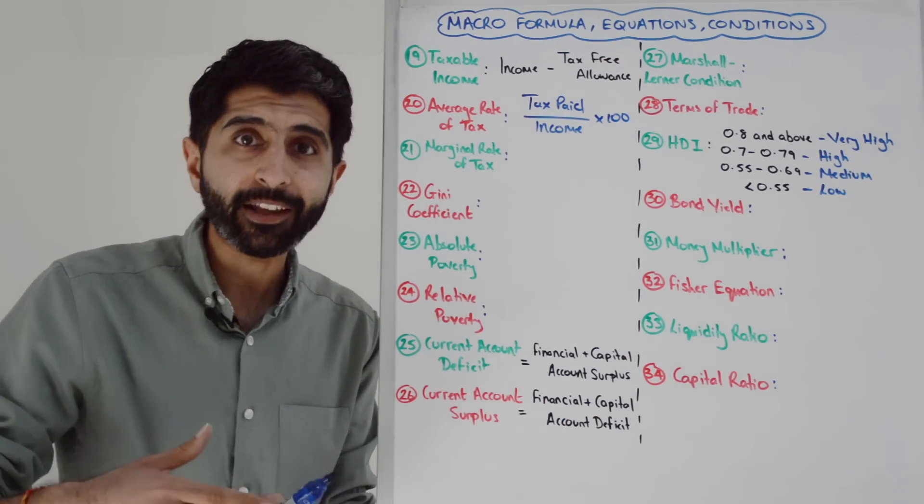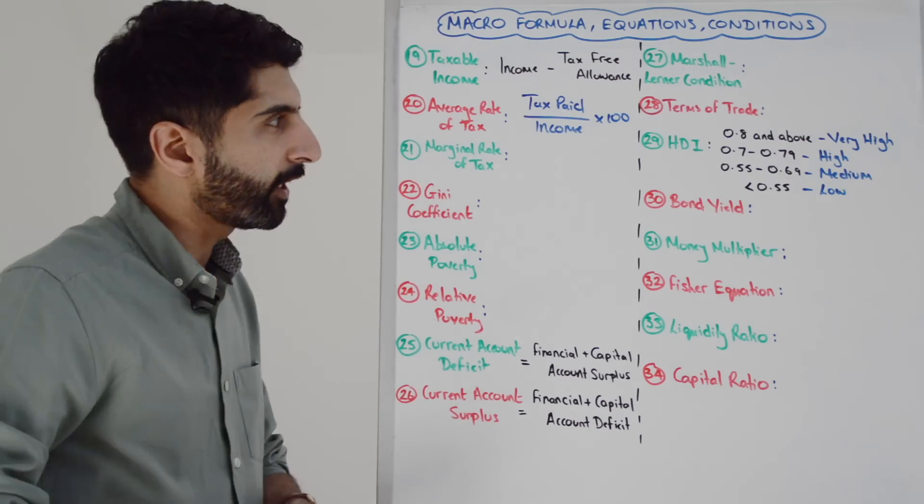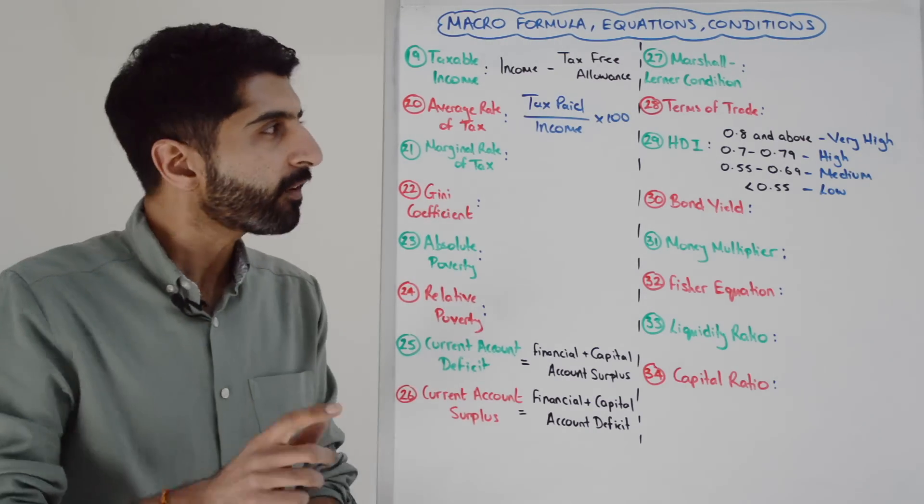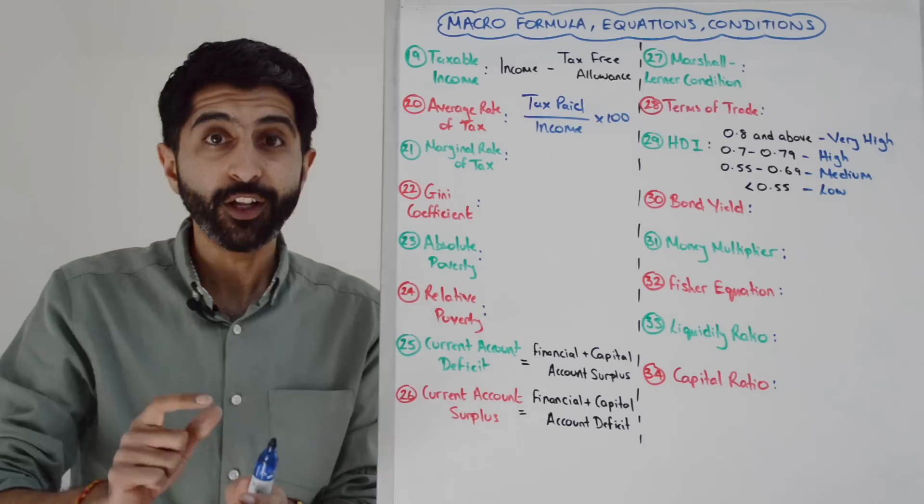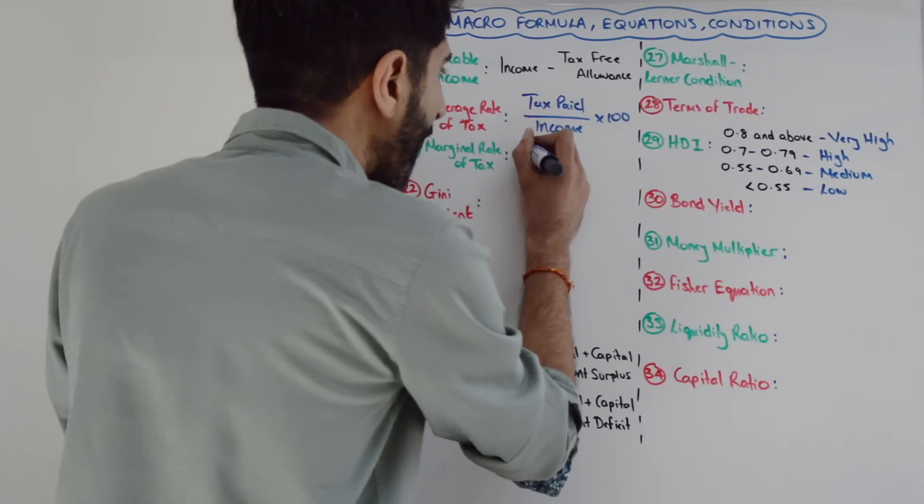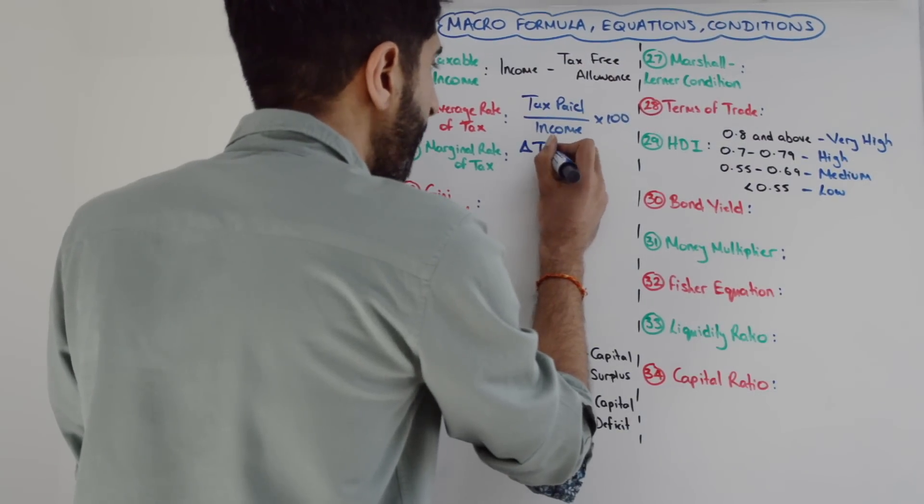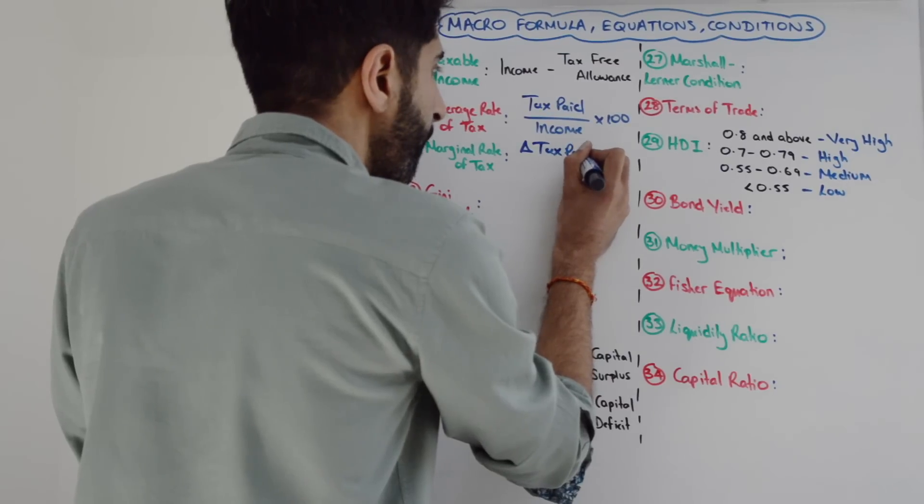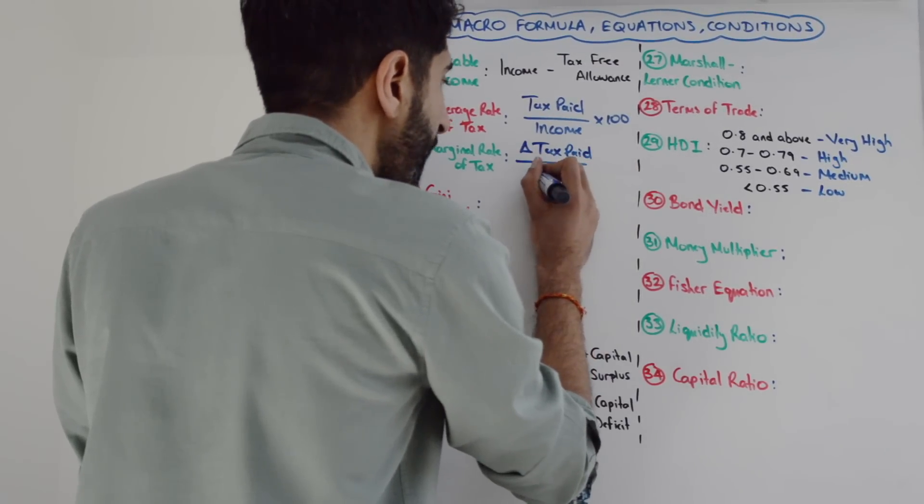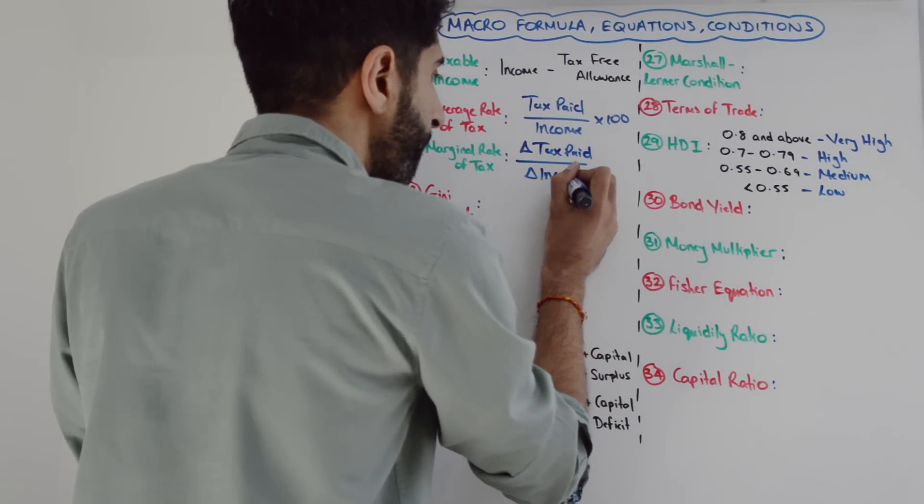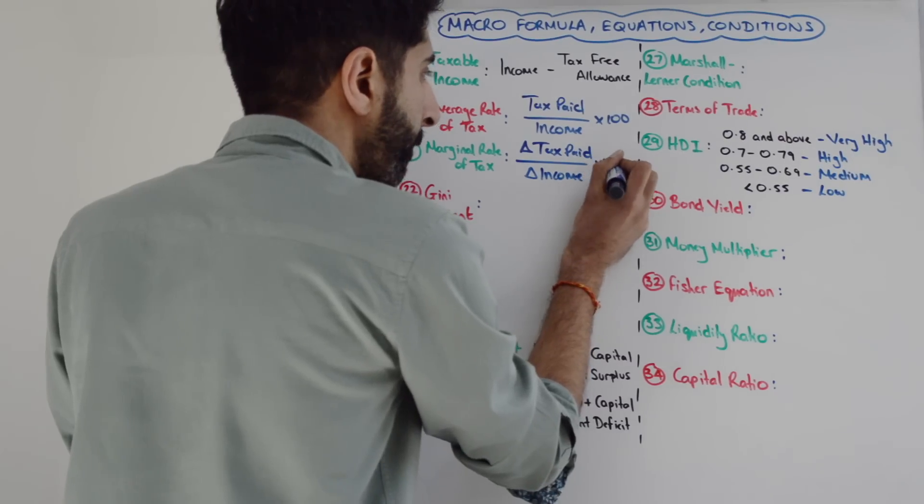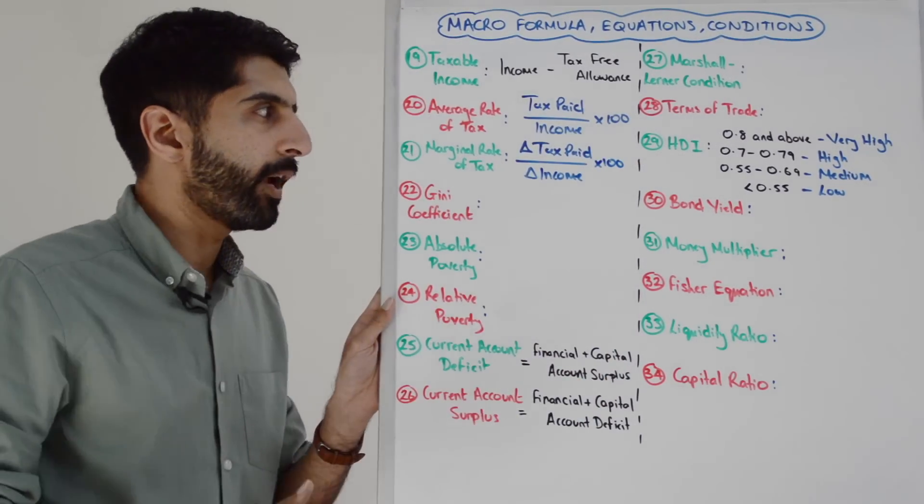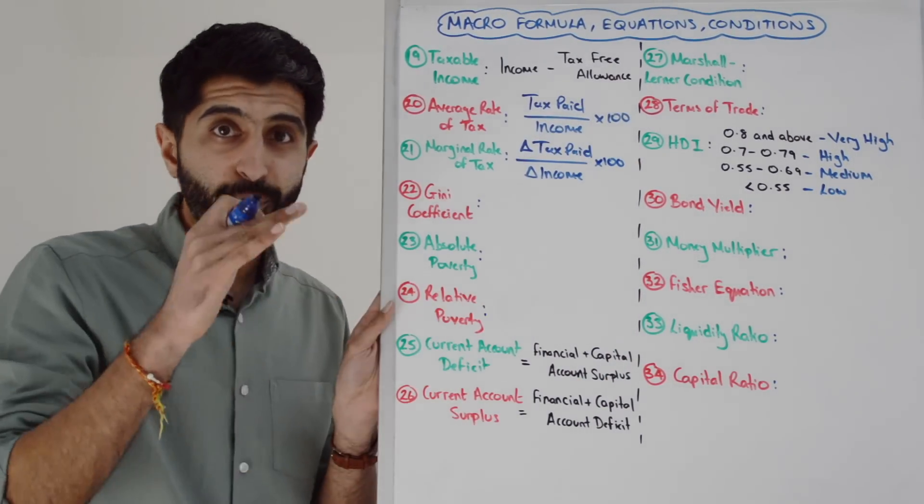What about the marginal rate of tax? A very useful equation to work out the tax rate on any additional income that's earned. The neat trick with marginal equations: it's always the average equation with changes in it. So now this is just the change in income tax paid divided by the change in income multiplied by 100.